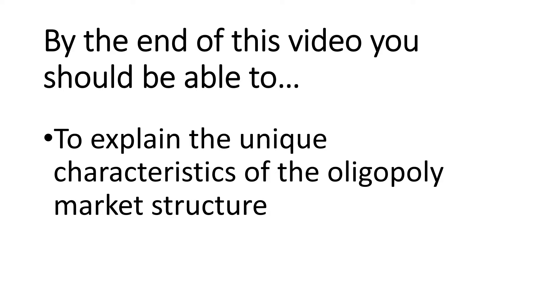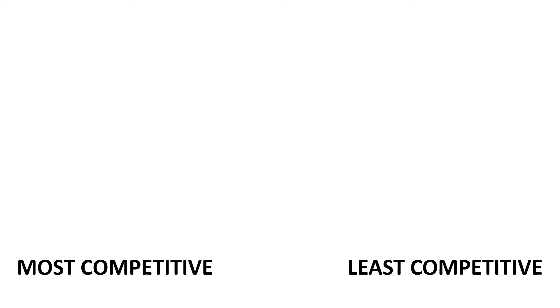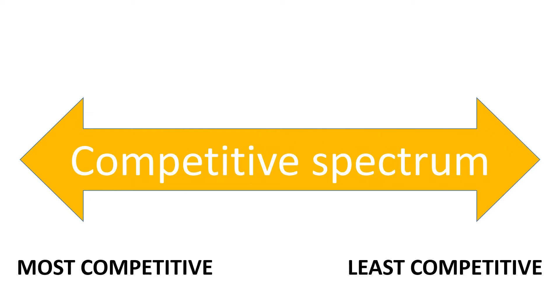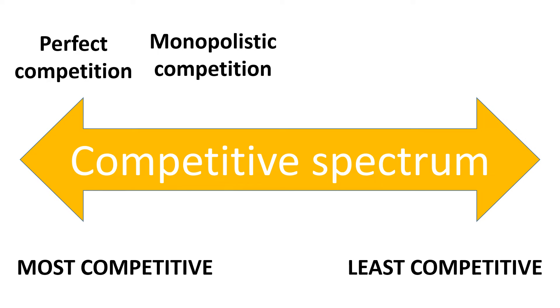In this video we'll start our analysis of the oligopoly market structure. By the end of this video you should be able to explain the unique characteristics of the oligopoly market structure. In our previous videos we've looked at perfectly competitive markets and have progressively moved away from highly competitive markets towards less competitive markets. The next video series will explore the least competitive market structure, monopoly.